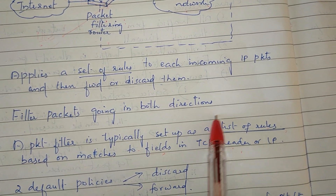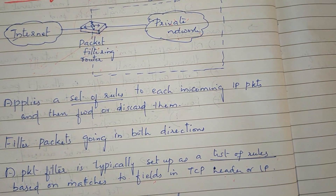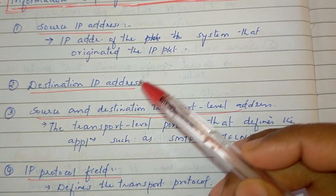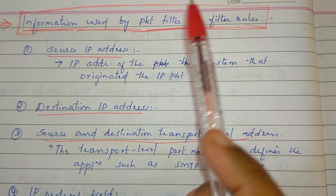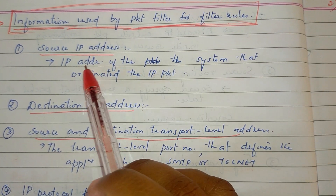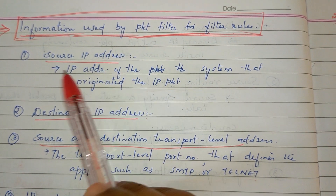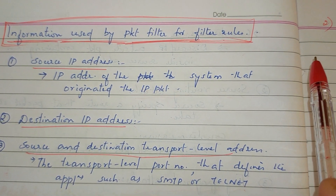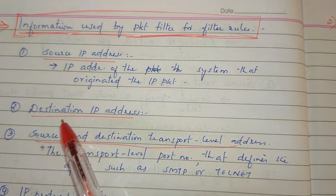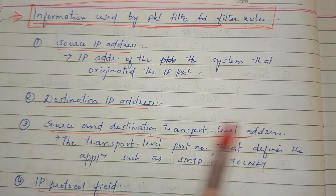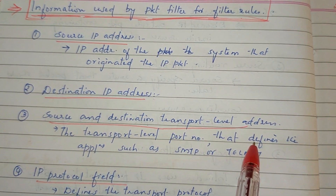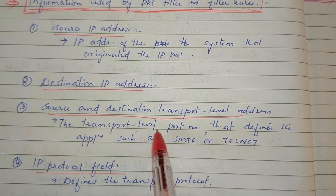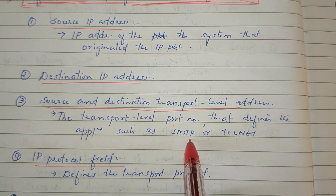The information used by the packet filter includes: source IP address, destination IP address, source and destination transport level address — that is, applications defined by the port number, such as SMTP or Telnet. The transport level port number defines the applications such as SMTP or Telnet.